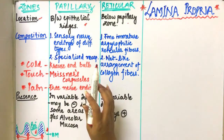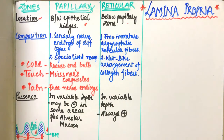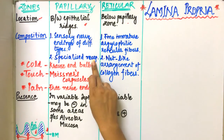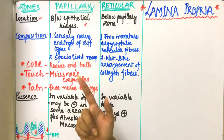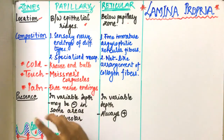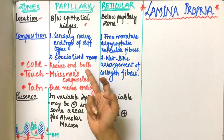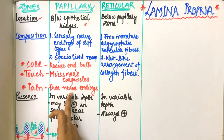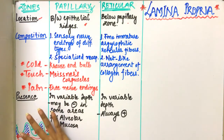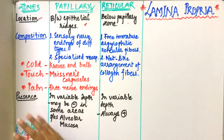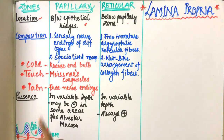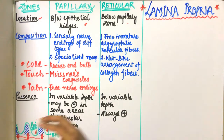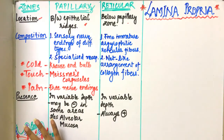The papillary zone contains sensory nerve endings of different types and specialized receptors for different sensations. For cold, it is the Krause's end bulbs; for touch, it is the Meissner's corpuscles; and for pain, it is the free nerve endings.